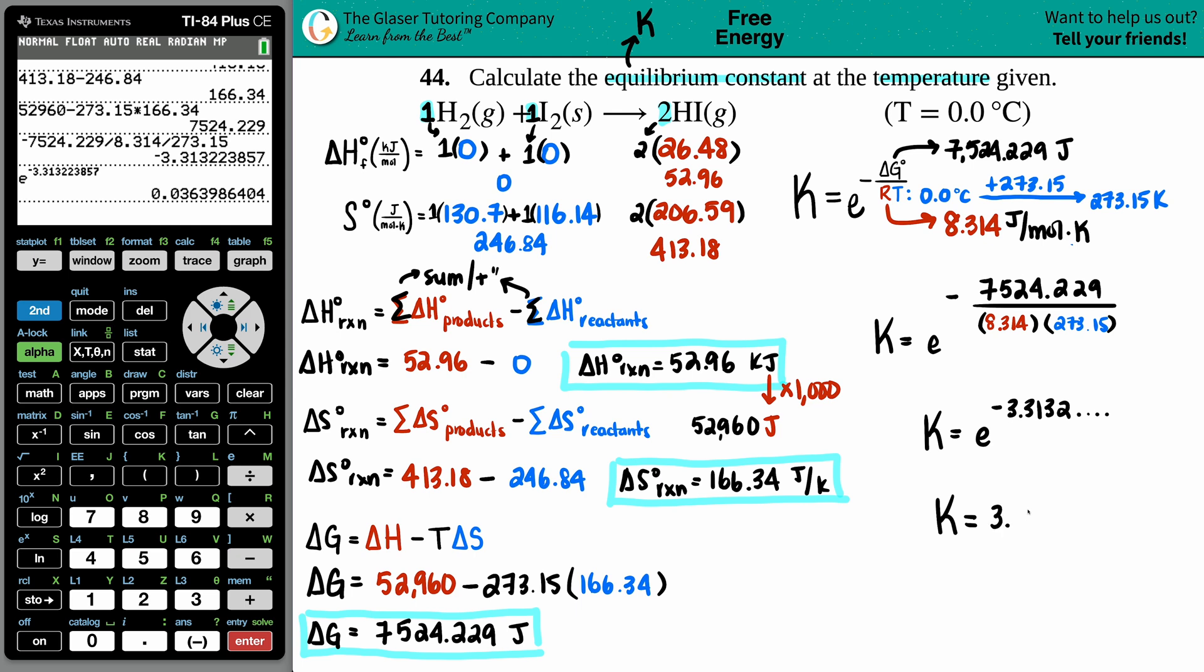We'll say 3.640 times 10 to the negative second if you wanted to put it into scientific notation. That's the answer on the screen, and that's it.